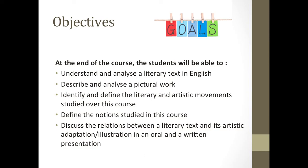The objectives are the following. At the end of this course you should be able to understand and analyze a literary text in English — something you probably already know how to do, but we'll make sure you do it well. You should be able to describe and analyze a work of art; this may be new to you. We'll give a few hints on how to analyze a painting. You will identify and define literary and artistic movements studied, define the notions studied, and discuss the relations between a literary text and its artistic adaptation, both in an oral and a written presentation.